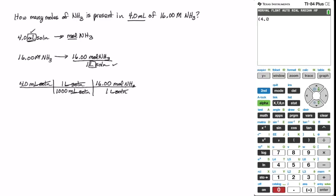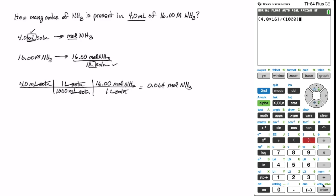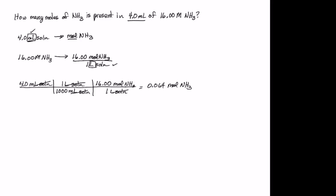So you have 4 divided by 1,000 times 16.00 and you get 0.064. We should always record our answer to the correct number of significant digits. This is multiplication and division, and according to those rules, your answer will have the same number of significant digits as the measurement with the fewest. 4.0 milliliters has two significant digits because zeros at the end of a number after the decimal are significant.